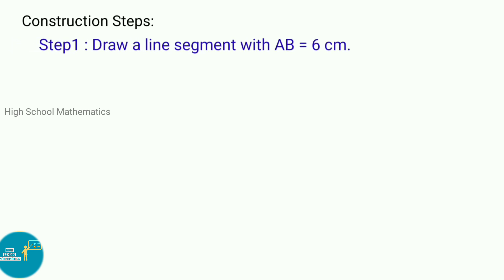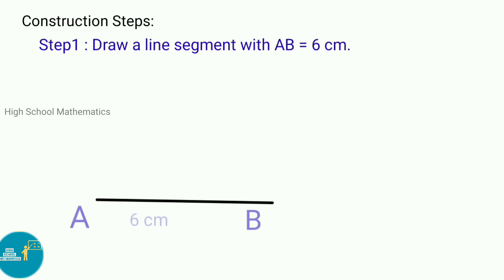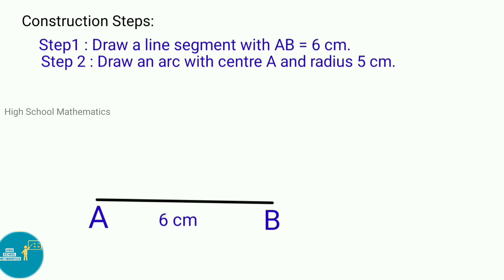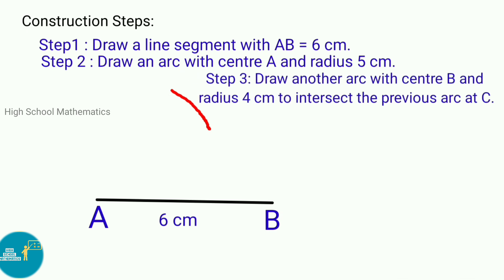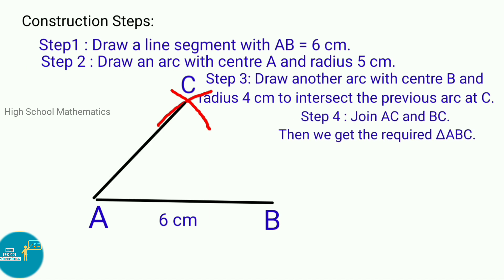See the construction steps. Step 1: Draw a line segment with AB equal to 6 cm. Step 2: Draw an arc with center A and radius 5 cm. Step 3: Draw another arc with center B and radius 4 cm to intersect the previous arc at C. Step 4: Join AC and BC. Then we get the required triangle ABC.